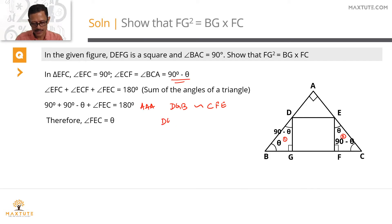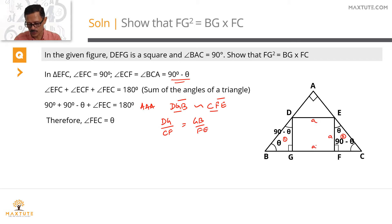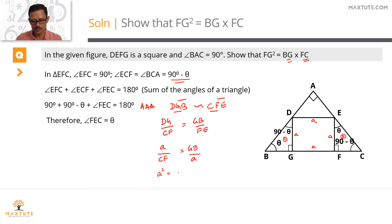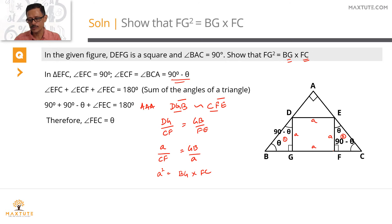Writing the proportions of corresponding sides: DG/CF = GB/FE. Since DG and FE are both sides of the square equal to A, and CF = FC, substituting gives A/FC = GB/A. Cross-multiplying: A² = BG × FC. Since A is the side of the square, A² = FG². Therefore FG² = BG × FC, which is exactly what we needed to prove.